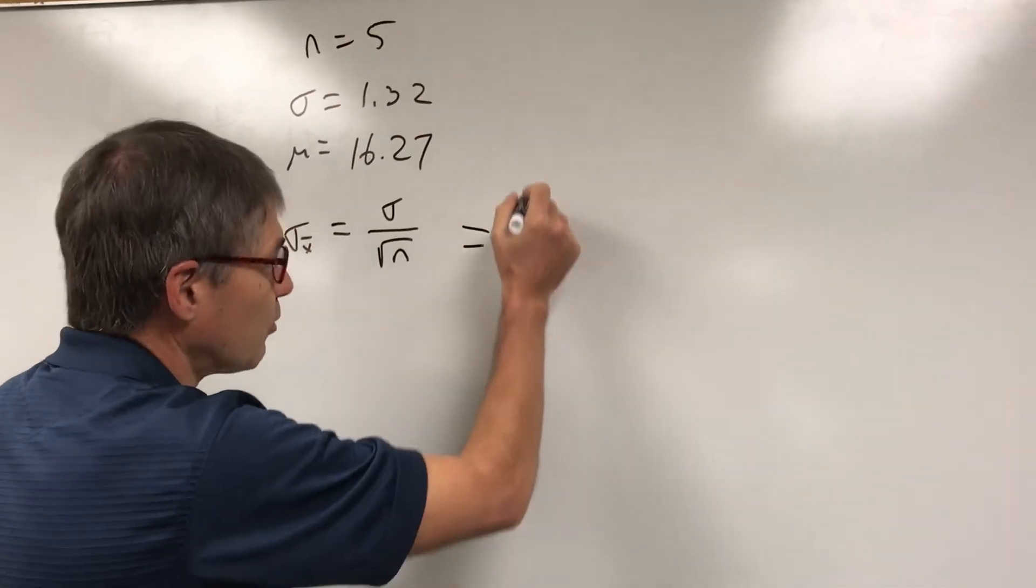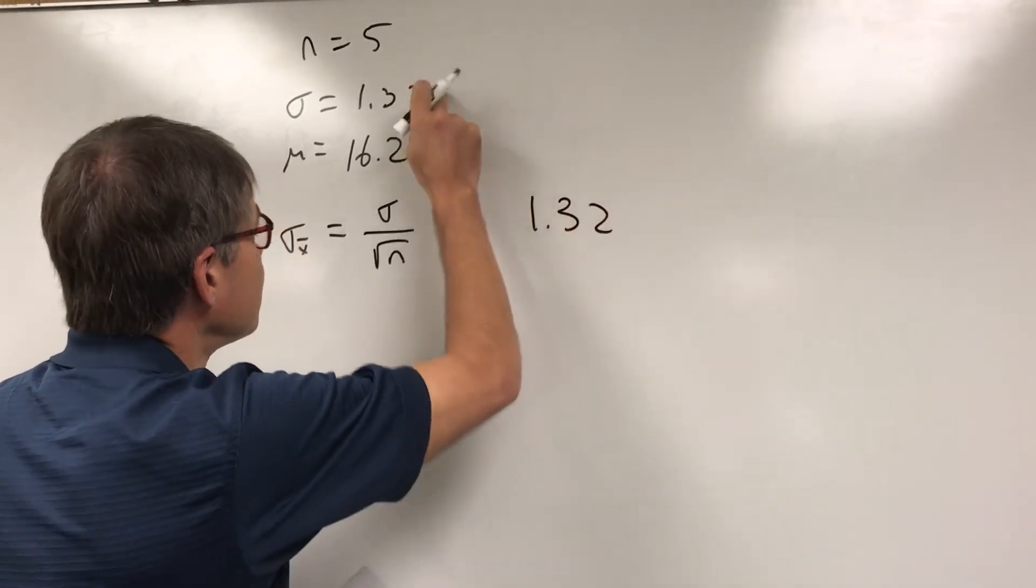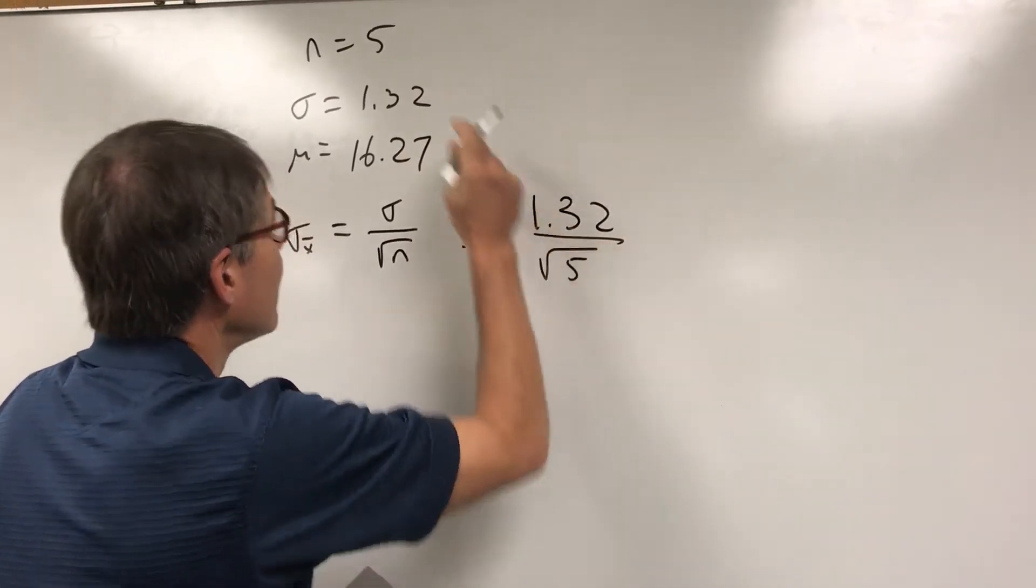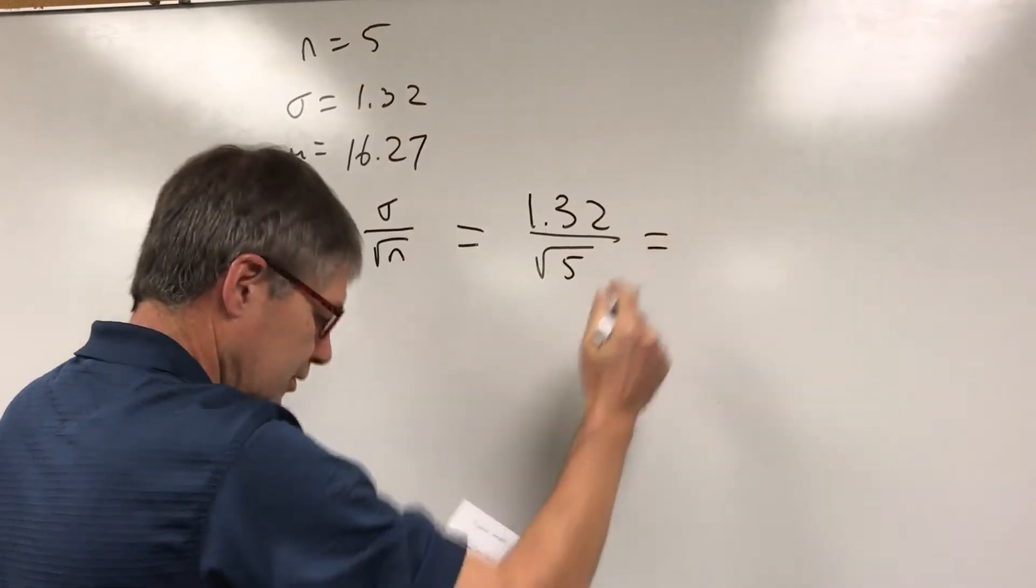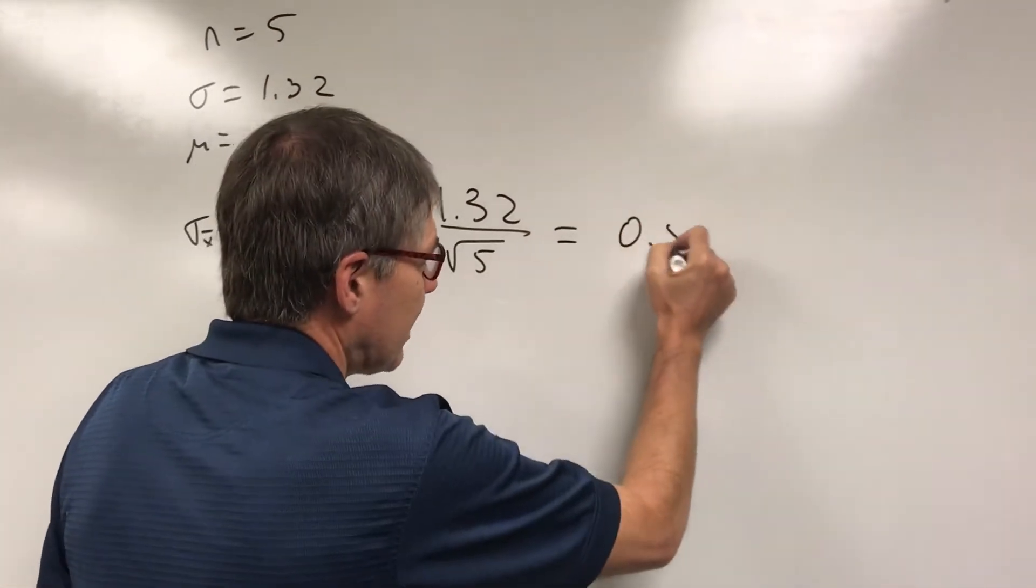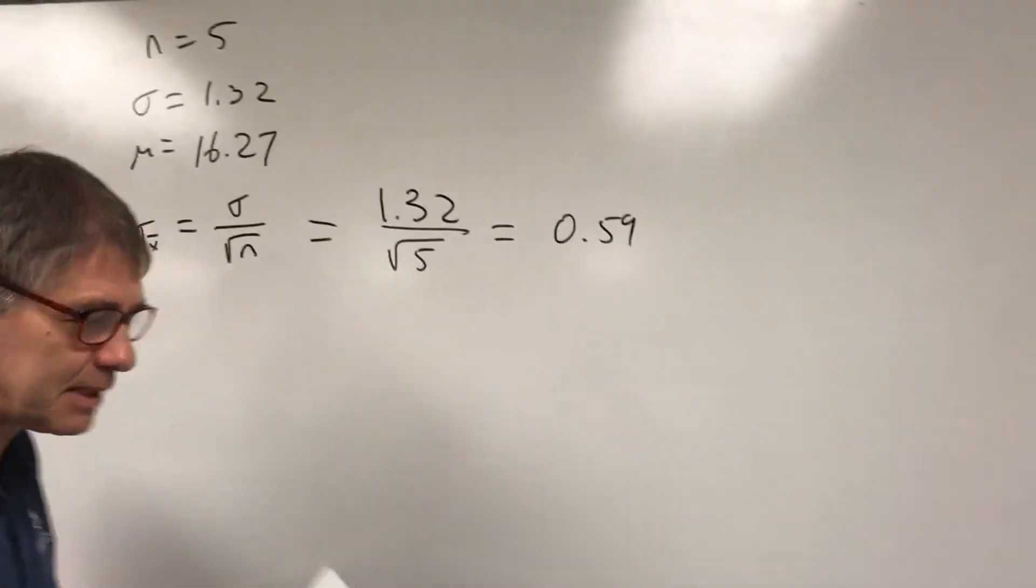So I plug that number in. It's 1.32 divided by the square root of five. Do the math on that. I get 0.59. Now this becomes our standard deviation of the means.